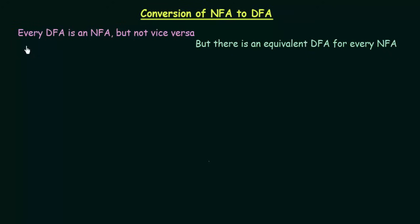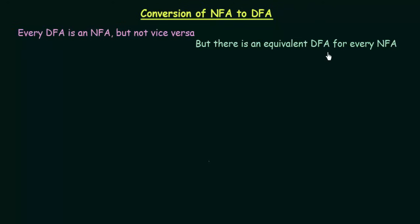We say that every DFA is an NFA but not vice versa — that means every DFA is an NFA but every NFA is not a DFA. However, there is an equivalent DFA for every NFA, meaning every NFA can be converted to an equivalent DFA.